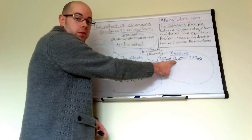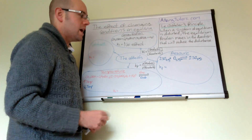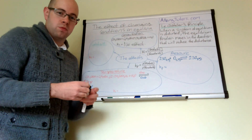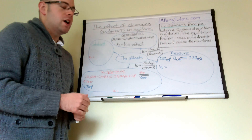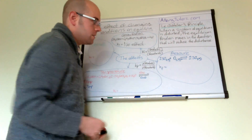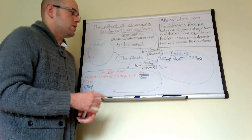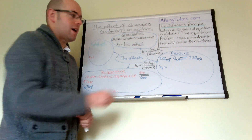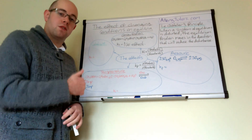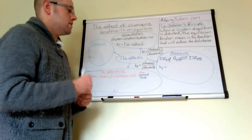There are three moles of gas on the left-hand side and two moles of gas on the right-hand side. If we increase the pressure, according to Le Chatelier's principle the reaction will try to reduce the pressure by shifting to the side with the fewest moles of gas — in this case, to the right. If we decrease the pressure, the equilibrium shifts to the left, towards the side with the most moles of gas. The effect on Kp is no effect — pressure does not change the value of Kp.